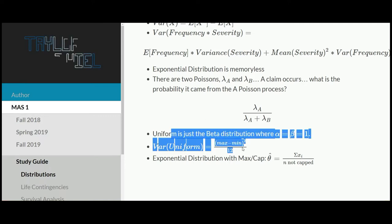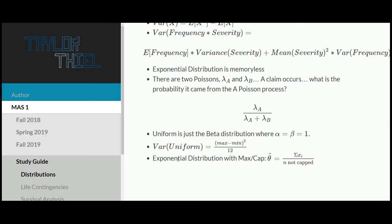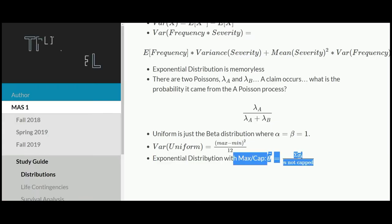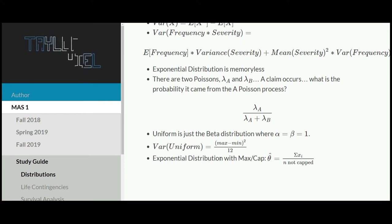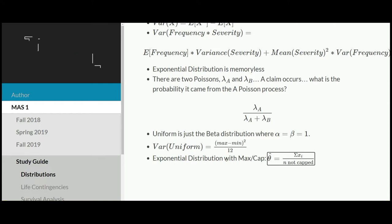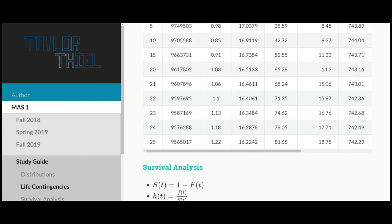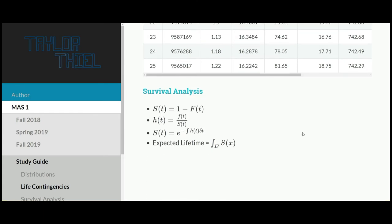Uniform shows up pretty frequently. The capped exponential MLE — I think that's only one or two past exam questions — is something you could work out on the fly using a solid understanding of maximum likelihood estimation, although it's good to know the shortcut. I'd say 50-50 chance of seeing it. We've now gone through life contingencies, so let's get back on track and go through survival analysis.